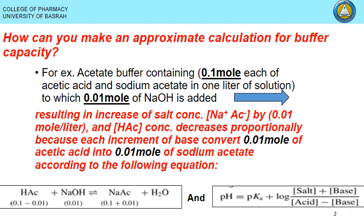To calculate buffer capacity, we first need to know what NaOH does to the equilibrium of acetic acid and sodium acetate. The NaOH reacts with the acetic acid to form sodium acetate, so it reduces the concentration of the acid and converts it into the salt sodium acetate.